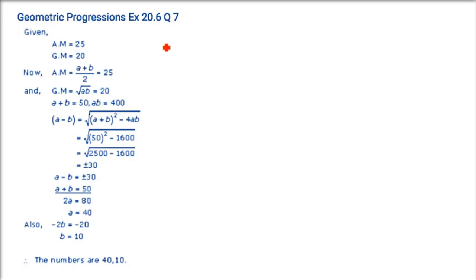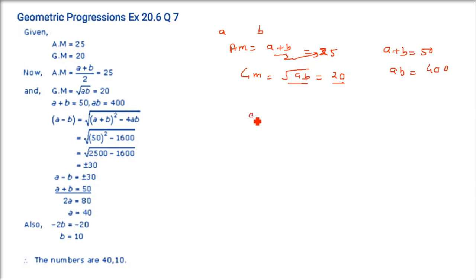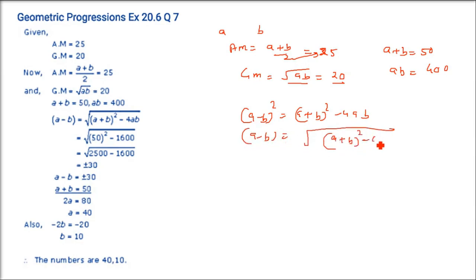Find the two numbers whose AM is 25 and GM is 20. If a and b are the two terms, AM = (a+b)/2 = 25 so a+b = 50. GM = √(ab) = 20, squaring gives ab = 400. Now using a−b = √((a+b)² − 4ab) = √(2500 − 1600) = √900 = ±30.